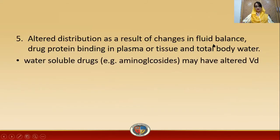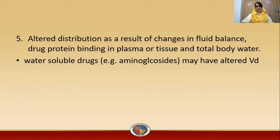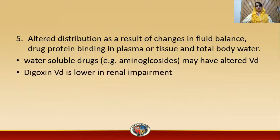Altered distribution occurs as a result of changes in fluid balance, drug-protein binding in plasma or tissue, and total body water. As renal drug excretion is reduced and fluid accumulates in the body, protein binding of drugs is affected. Water-soluble drugs such as aminoglycosides may have an altered volume of distribution. Digoxin's volume of distribution is lower in the case of renal impairment.